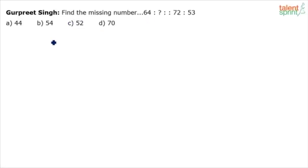Find the missing number. This is what is given: 64 is to question mark, in a similar way 72 is to 53. So there is some relationship between 72 and 53. In a similar fashion there is a relationship between 64 and question mark. Find out that question mark.